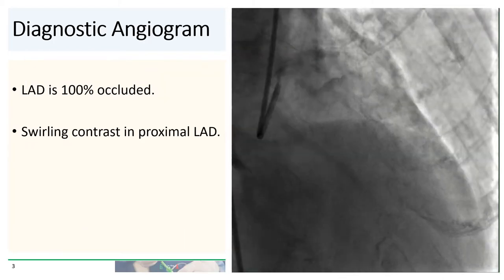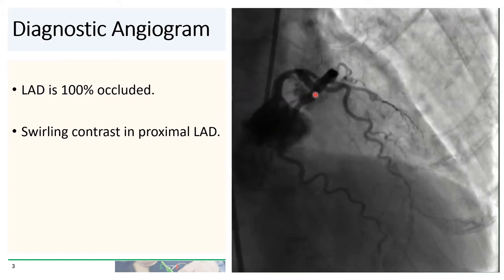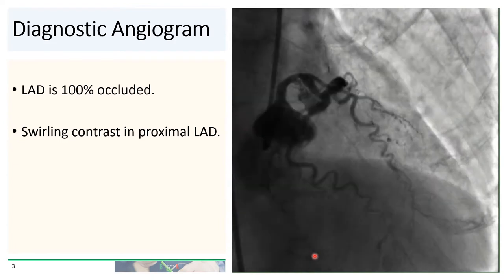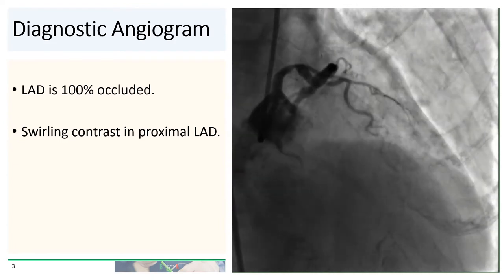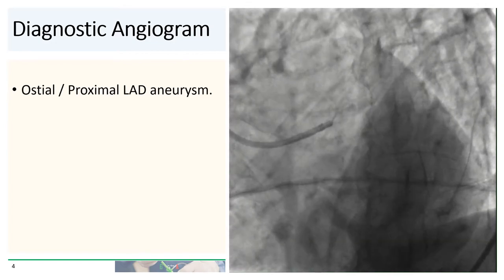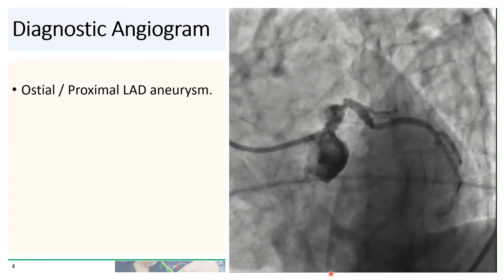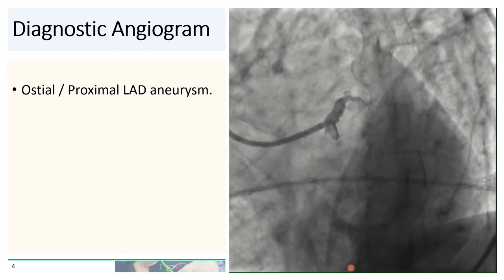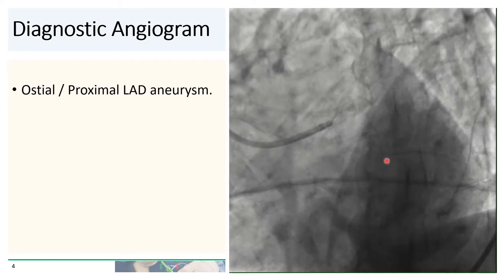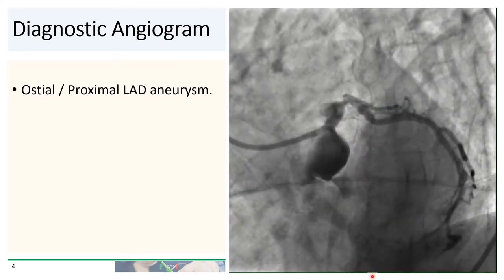On diagnostic angiogram, the LAD is 100% occluded, and you'll notice evidence of swirling contrast in the proximal LAD. There is moderate disease in the proximal circumflex artery as well. On the SPIDER view, you can more clearly see evidence of what looks like an aneurysm in the proximal LAD, but with the LAD unfortunately occluded somewhere after the aneurysm.